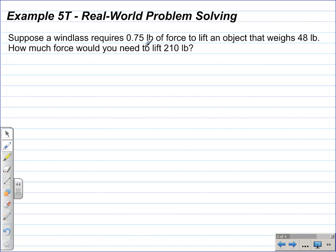Direct variation problems can be solved with ratios and proportions. And even though this is a proportion problem, I'll start off by looking at or examining the ratio that I will use to set up the proportion. In the first sentence, it talks about the windlass requiring 0.75 pounds of force to lift an object that weighs 48 pounds. So the two units of measure that we are comparing here are force to weight. And I'll write that as a ratio with words.